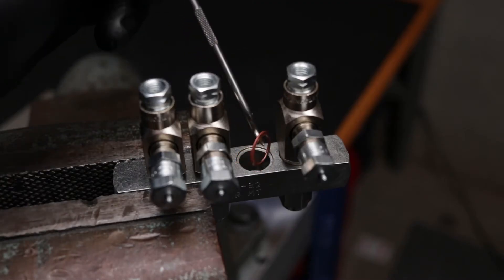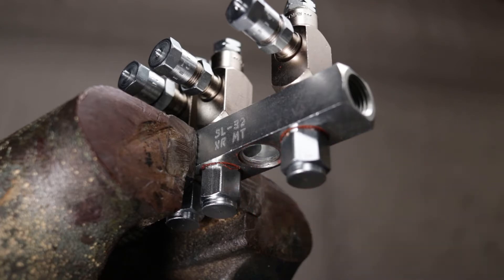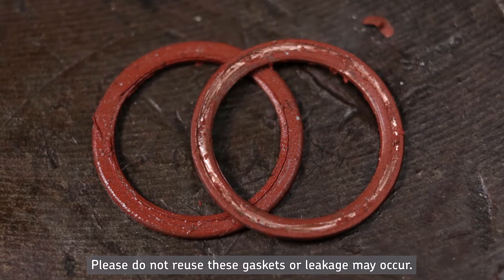Next, remove the two copper crush washers from the manifold and discard. These washers are single use only. Please do not reuse or leakage may result.